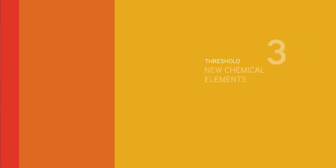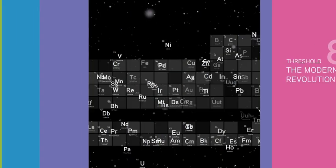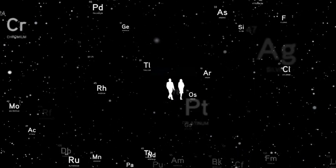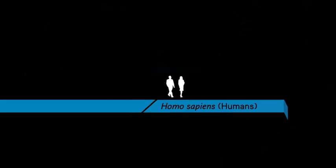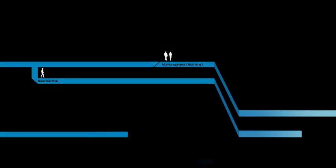Eight thresholds explain how a relatively simple universe transformed into the rich complexity that's all around us today. Each threshold builds upon the previous one. Together, they help explain where everything came from, our own place in the universe, and where things may be heading.